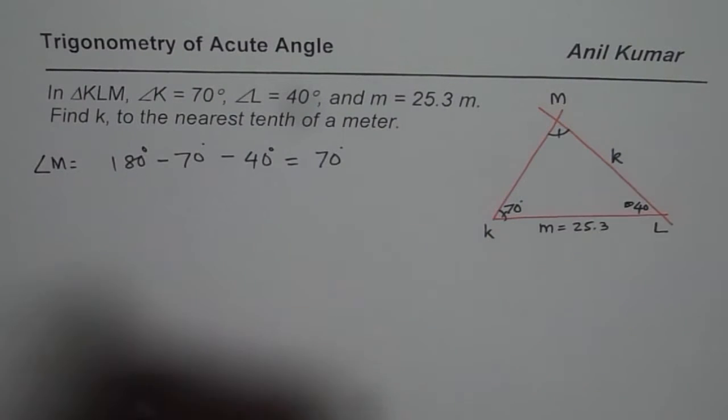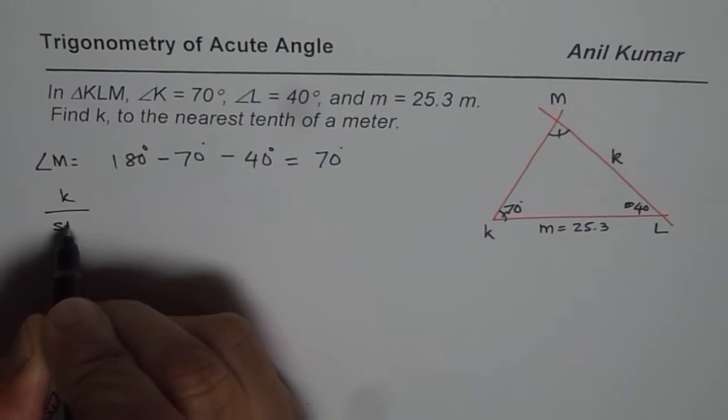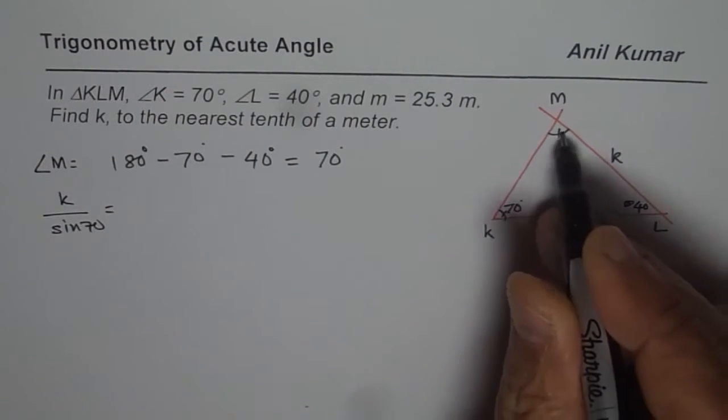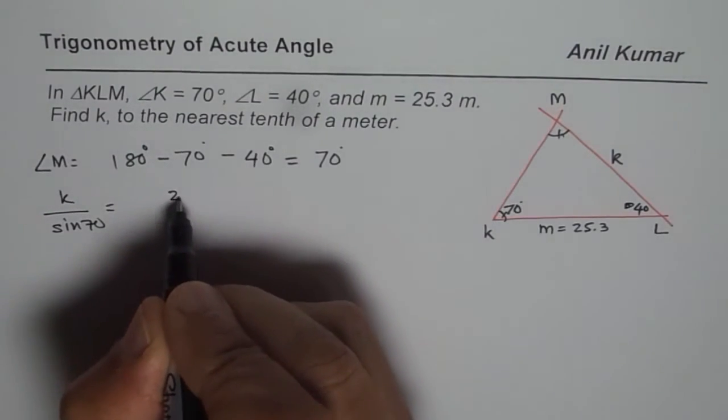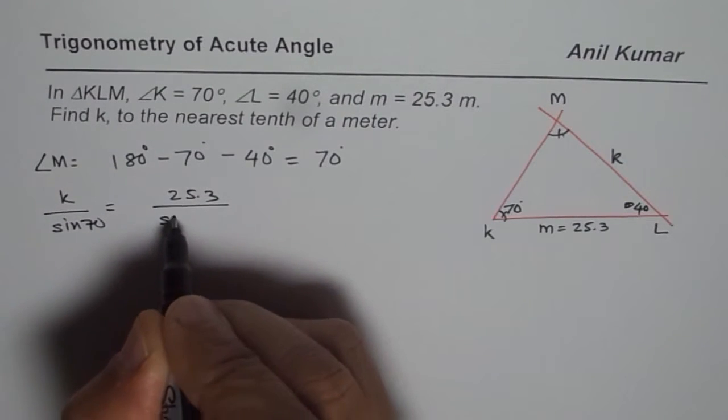Since we need to find side K, we can say K divided by sine of 70 degrees should be equal to 25.3 divided by sine of 70.